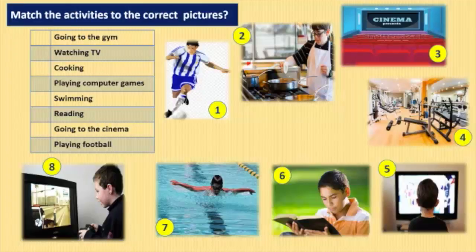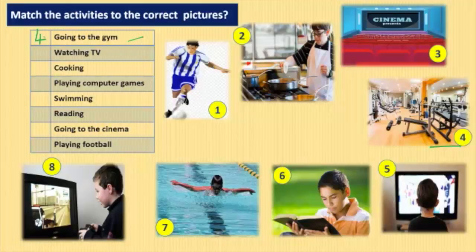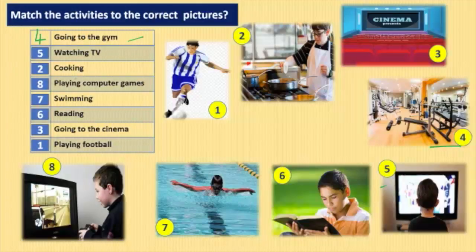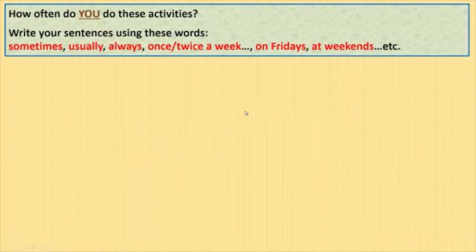Next task — we have eight pictures and a table with the names of these activities. Match the activities to the correct pictures. Going to the gym is picture number four. Watching TV is number five, cooking number two, playing computer games eight, swimming seven, reading six, going to the cinema is picture number three, and playing football is obviously number one.